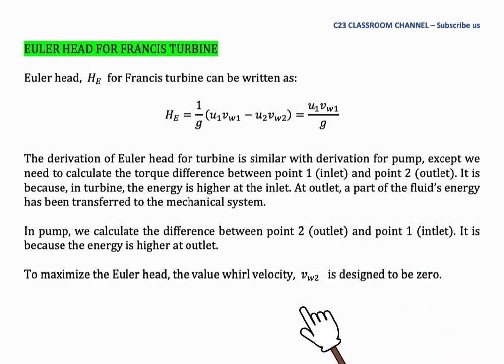The derivation of Euler head for turbines is similar to the derivation for pumps, except we need to calculate the torque difference between point one, which is the inlet, and point two, which is the outlet. It is because in turbines, the energy is higher at the inlet.